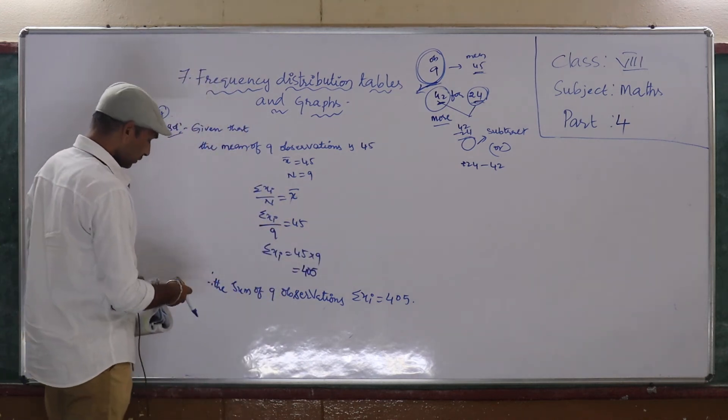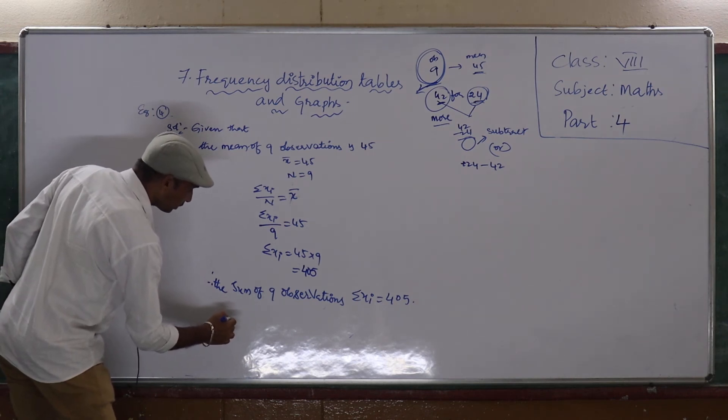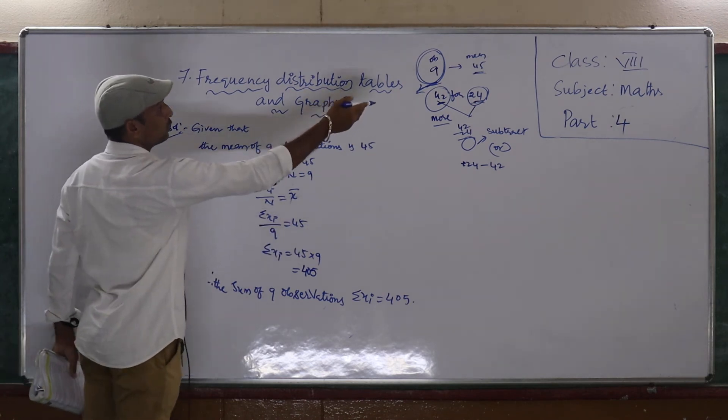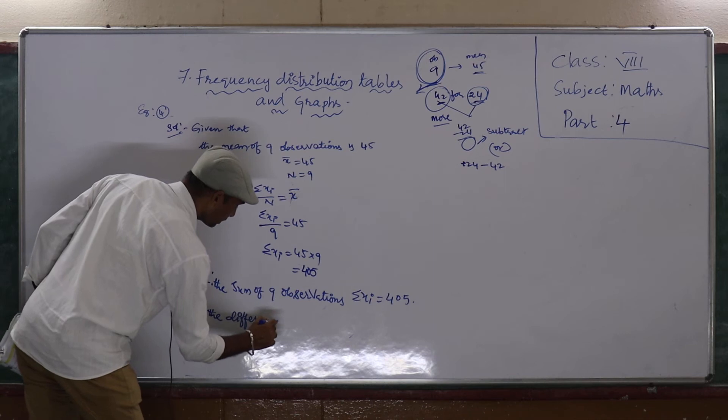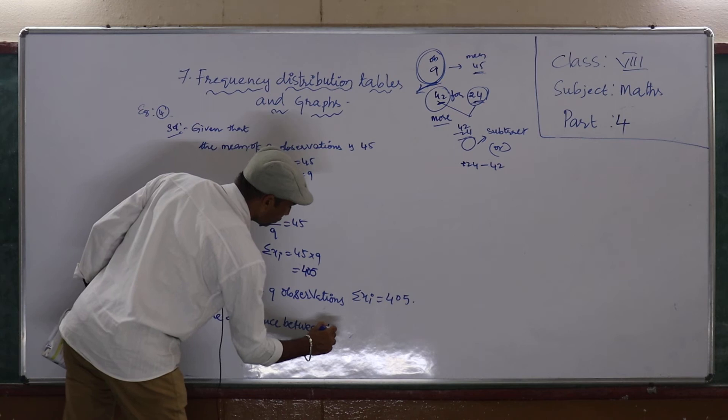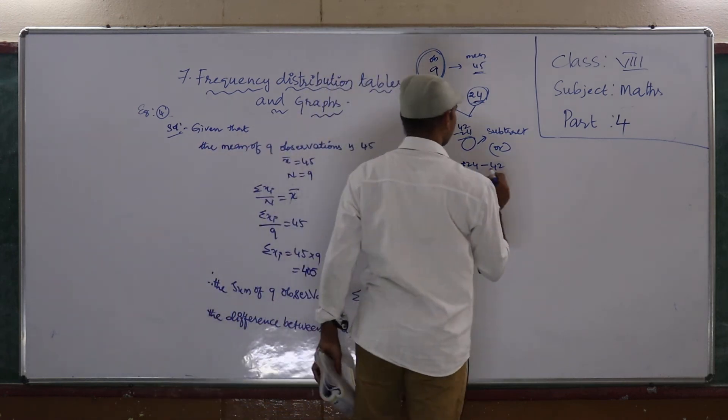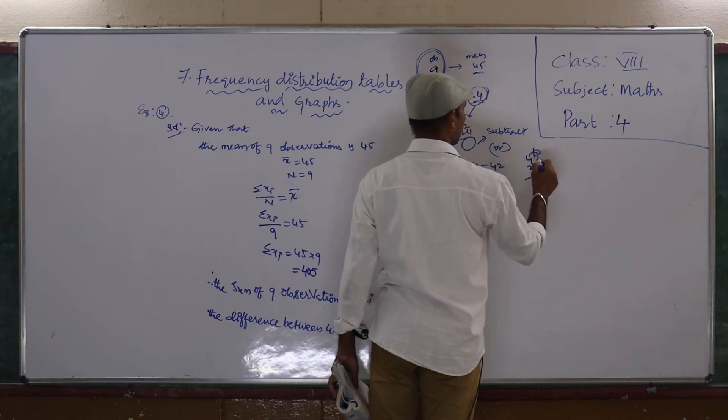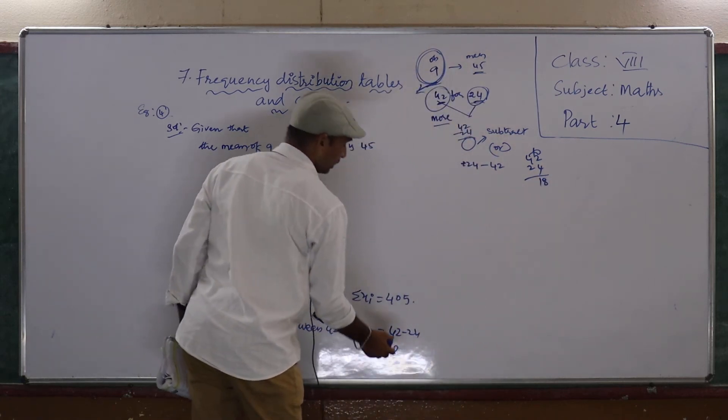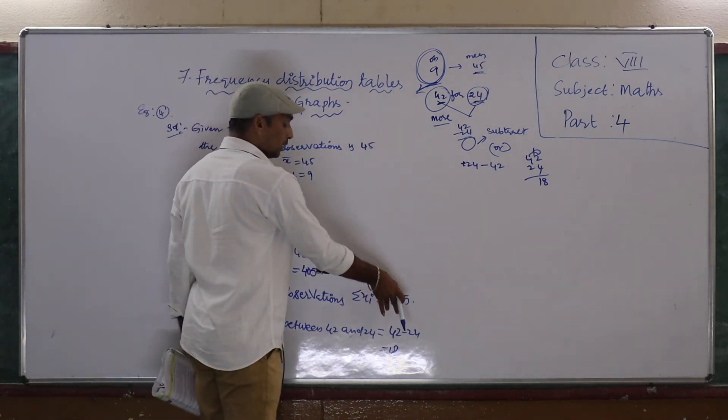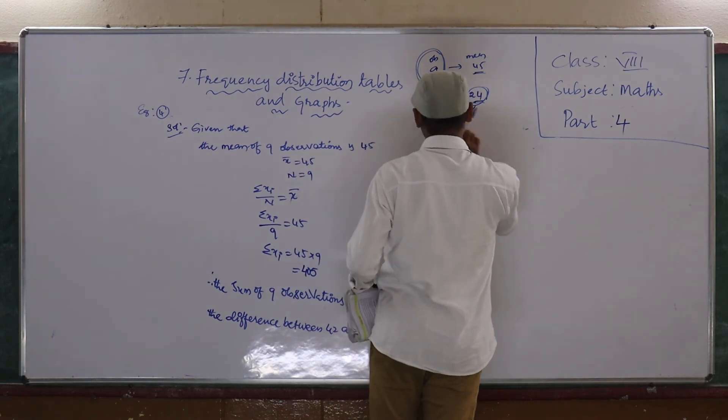The difference between 42 and 24. That is equal to 42 minus 24, how much we will get? 42, 24. So here 12 minus 8, then 3 minus 2 is 1. That is equal to 18. So 18 is there more. So actually, to get the actual answer, more we are getting 18. That 18 we have to subtract from the sum of 9 observations.